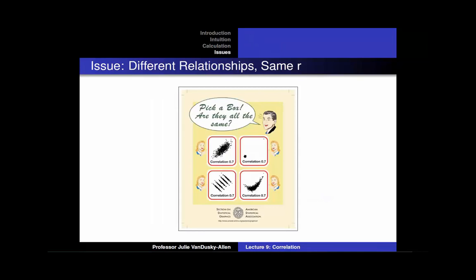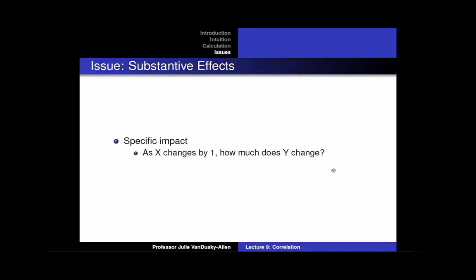To finish the lecture, I would like to discuss two problems with correlation coefficients. First, different relationships between x and y can have different patterns but the same correlation coefficient, so a correlation coefficient can give you a general idea of the relationship between two variables but cannot tell you exactly what that relationship looks like. Second, correlation coefficients cannot tell you the specific relationship between x and y — they cannot tell you, as x changes by 1, how much does y change. That is what a regression analysis tells you, which is the subject of the final lecture in this course.